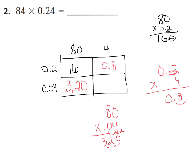And last but not least, we have 4 hundredths times 4. 4 times 4 is 16. 4 times 0 tenths is 0, but you have to add that 1 that you regrouped, so you'll have 1 tenth and then 0 wholes. We have 2 spots to my hundredths place. Therefore, 4 groups of 4 hundredths is 16 hundredths. That makes sense. Now all we have to do is add up all of our partial products.